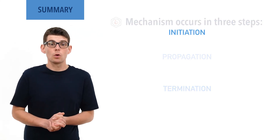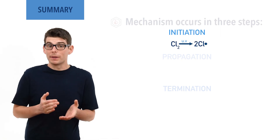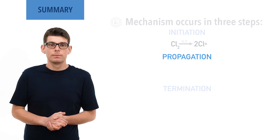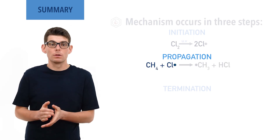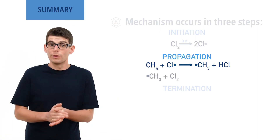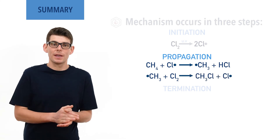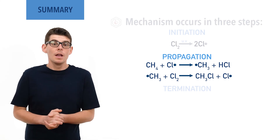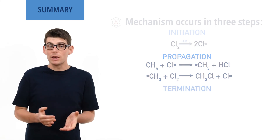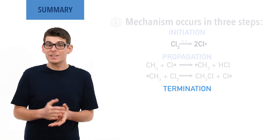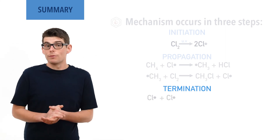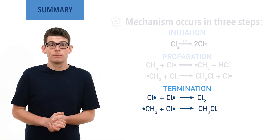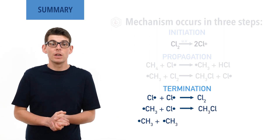Initiation is the formation of the chlorine or bromine radical by homolytic fission. Propagation is the reaction between a radical and a non-radical, producing a new molecule and a new radical. A halogen radical can react with an alkane forming an alkyl radical and hydrogen halide, and an alkyl radical already formed can react with a halogen molecule to form a halogenoalkane and halogen radical. The propagation steps can just keep going on and on, making it a chain reaction. Termination is the combining of two radicals to form a non-radical, ending the chain reaction. Two halogen radicals can combine to form a halogen molecule, an alkyl radical can combine with a halogen radical to form a halogenoalkane, and two alkyl radicals can combine to form a longer chain alkane.